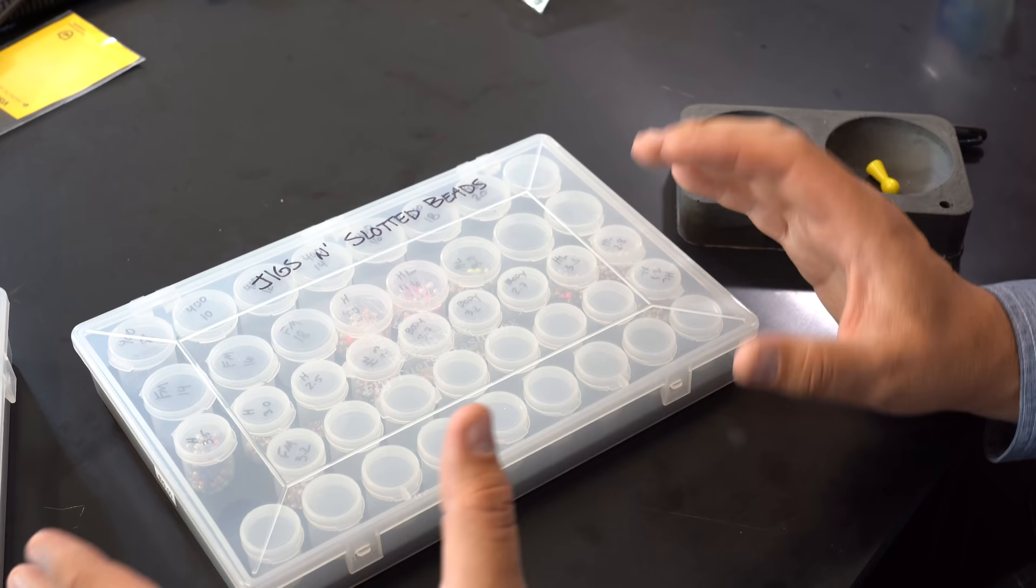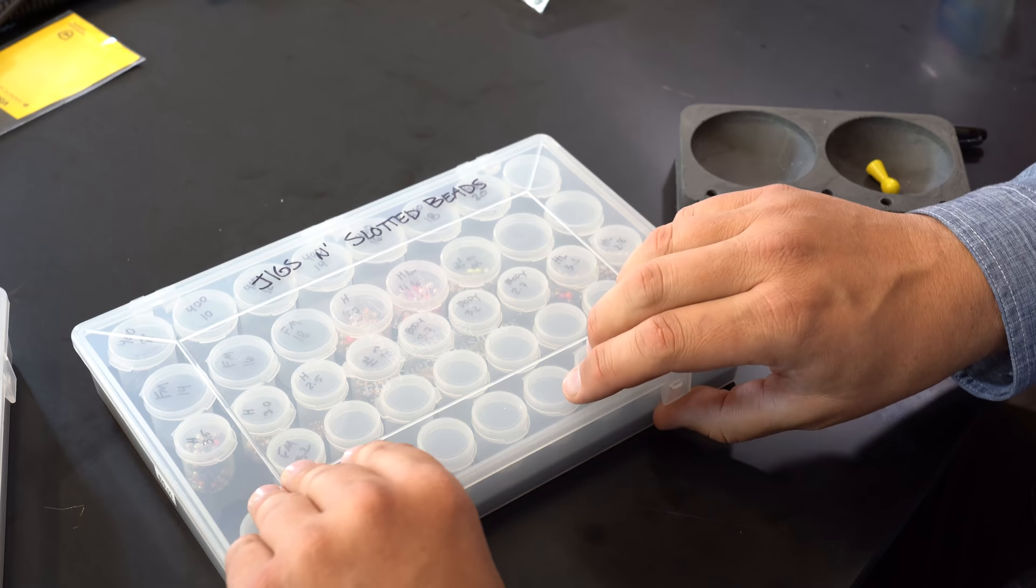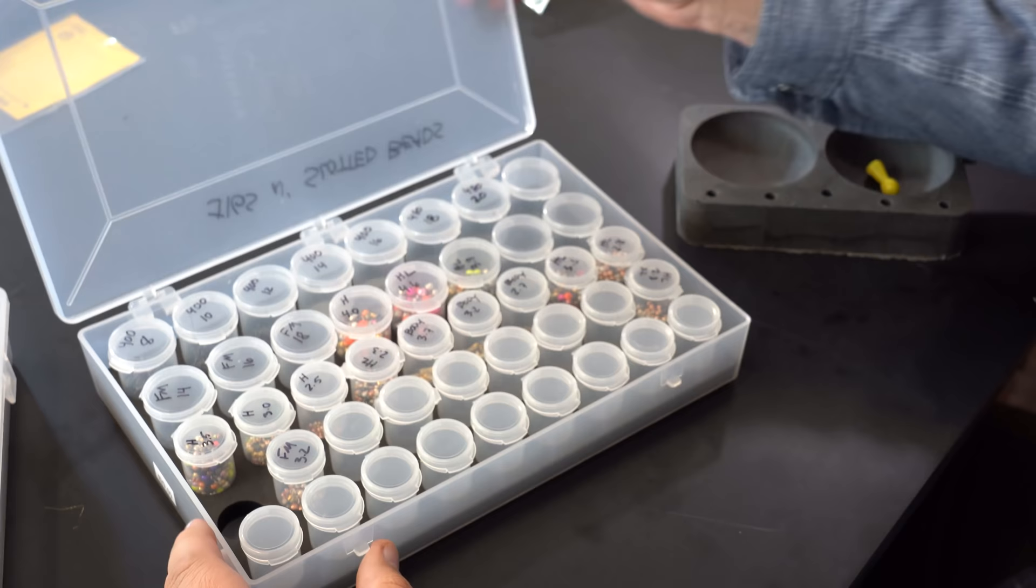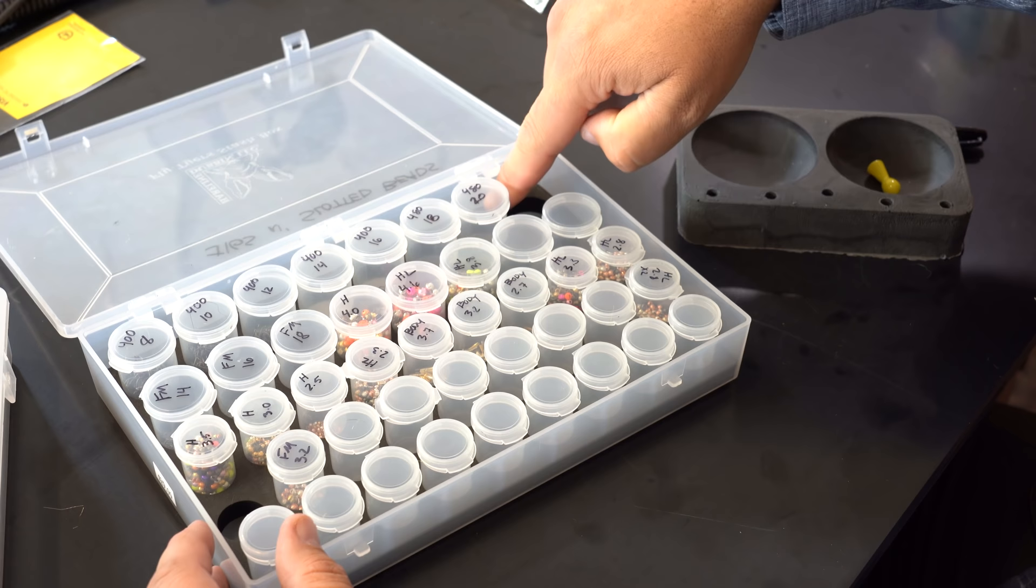Okay, so this box is really awesome. I have a whole bunch of other organization boxes, and I took a bunch of my hooks and beads out of those and put them into this. When you open it up, it double-clasps down on both sides, so like I said, I dropped it and it didn't come open. And it has 43 different slots.